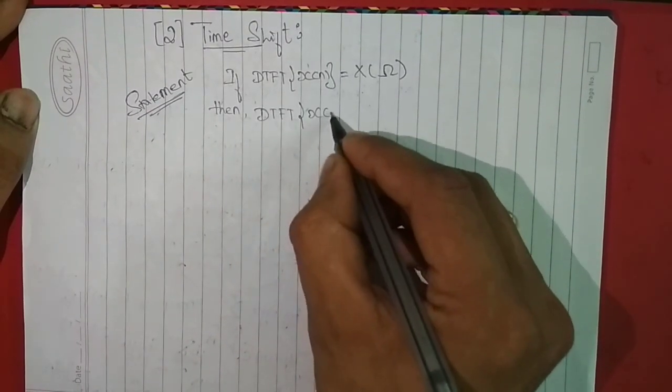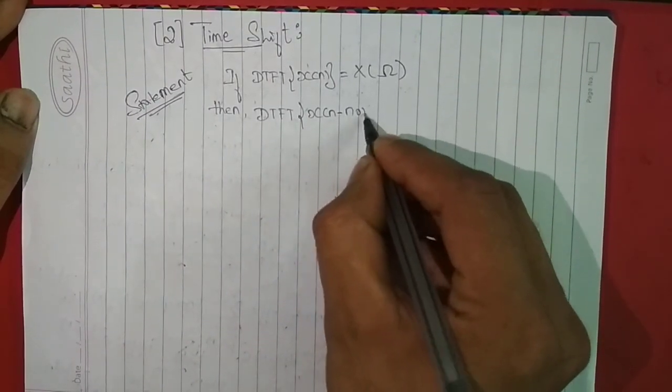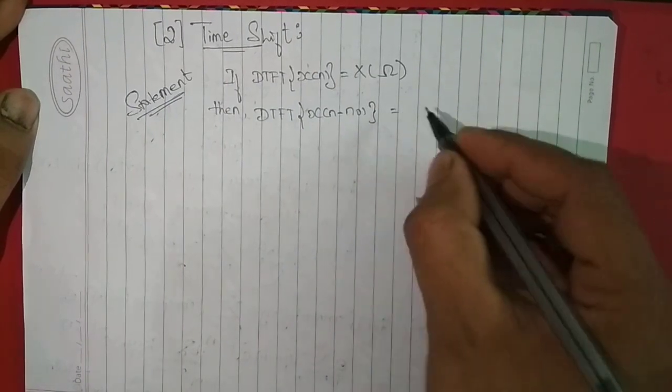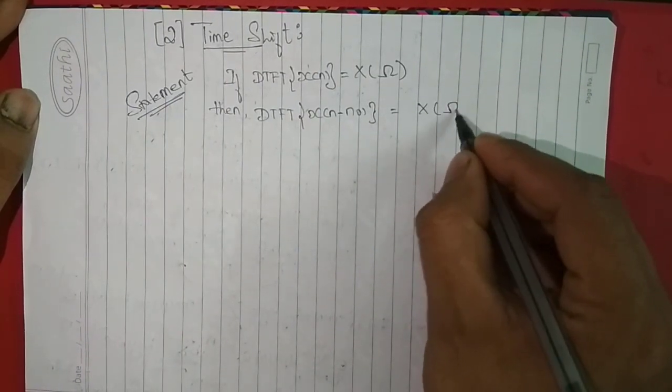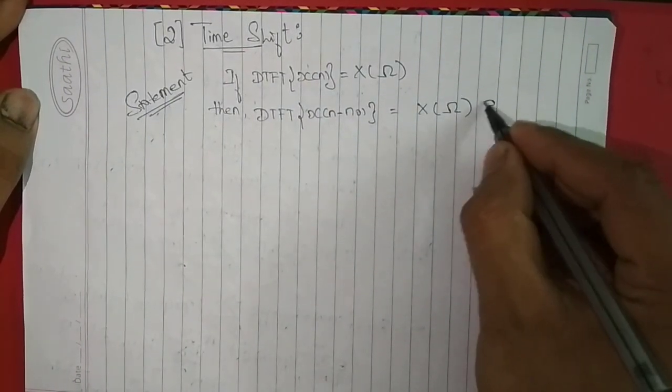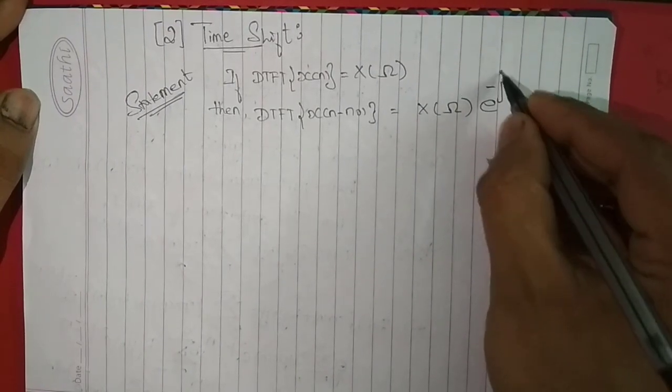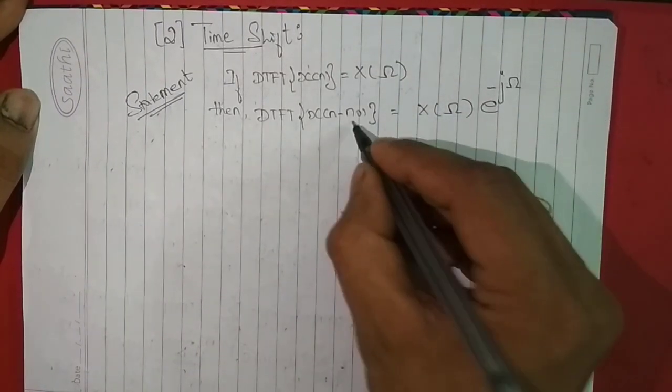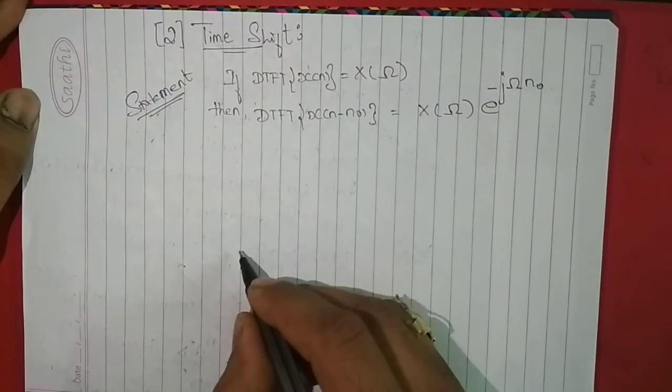the time-shifted version of x(n), that is x(n-n0), is given by capital X(ω) multiplied with e^(-jω) and how many times it is shifted. Here it is n0 times.